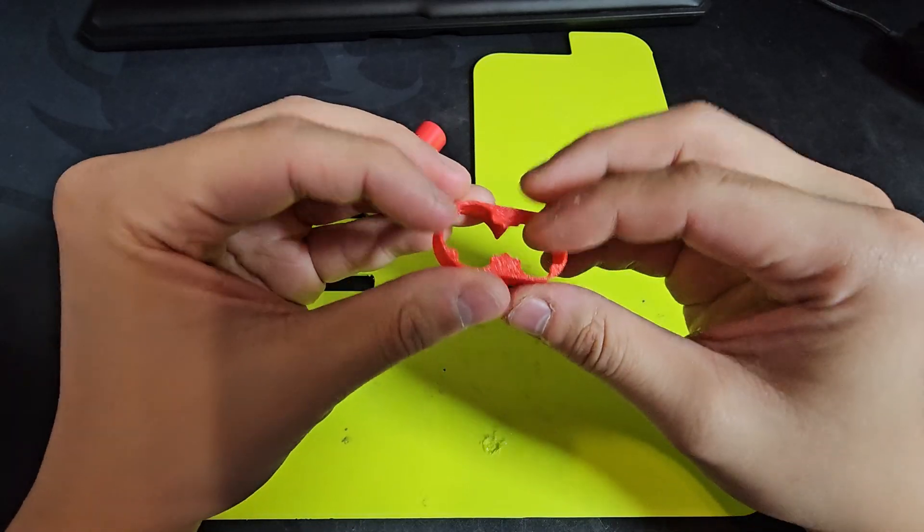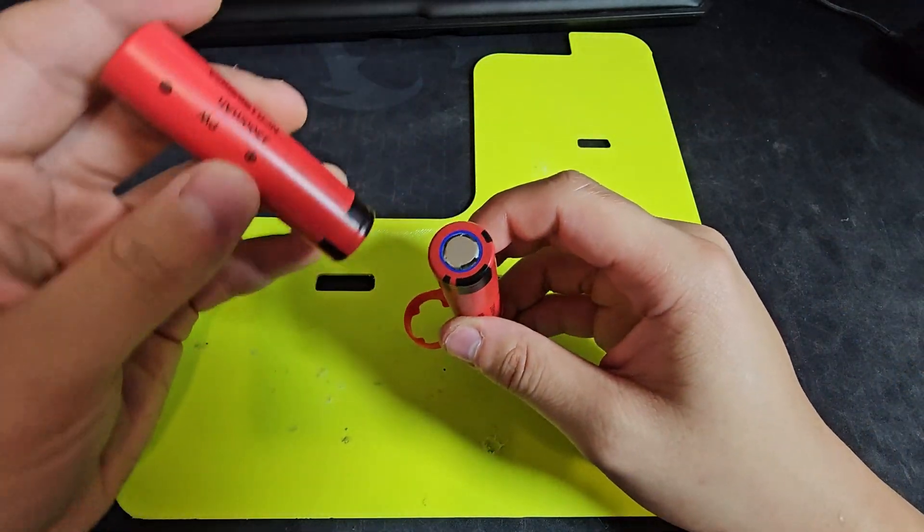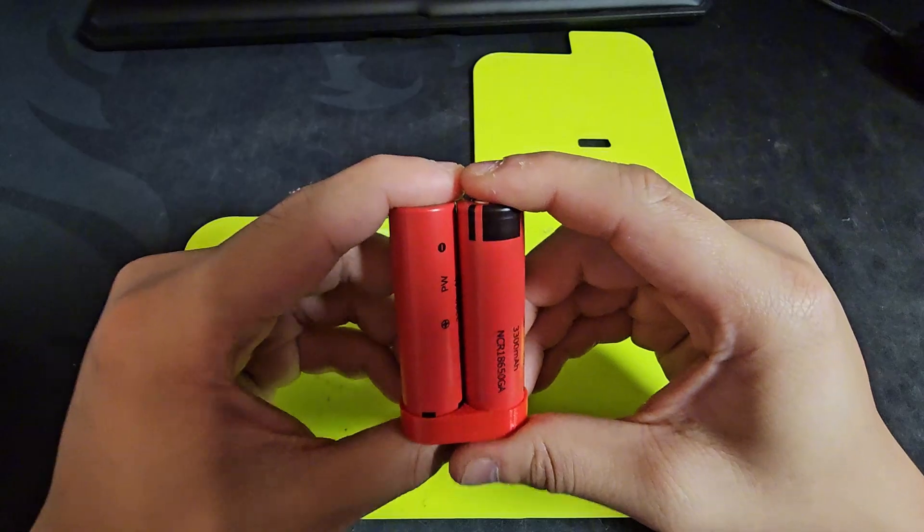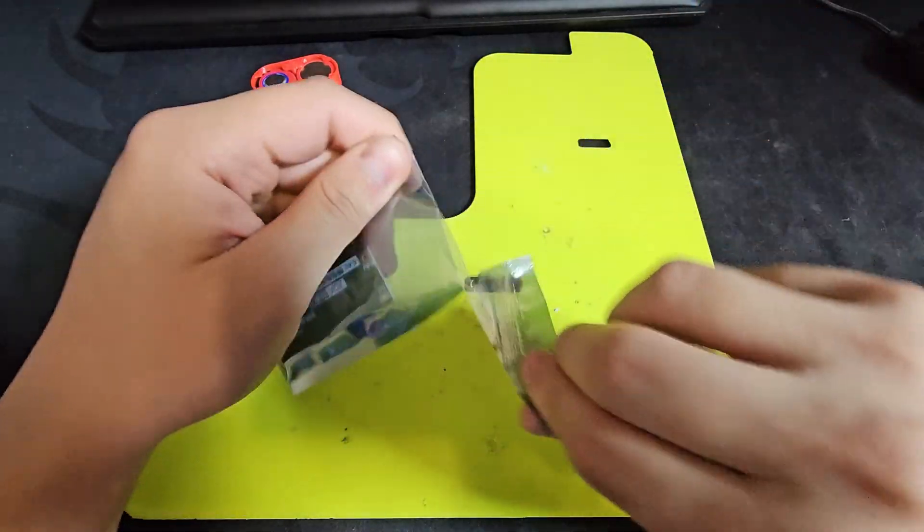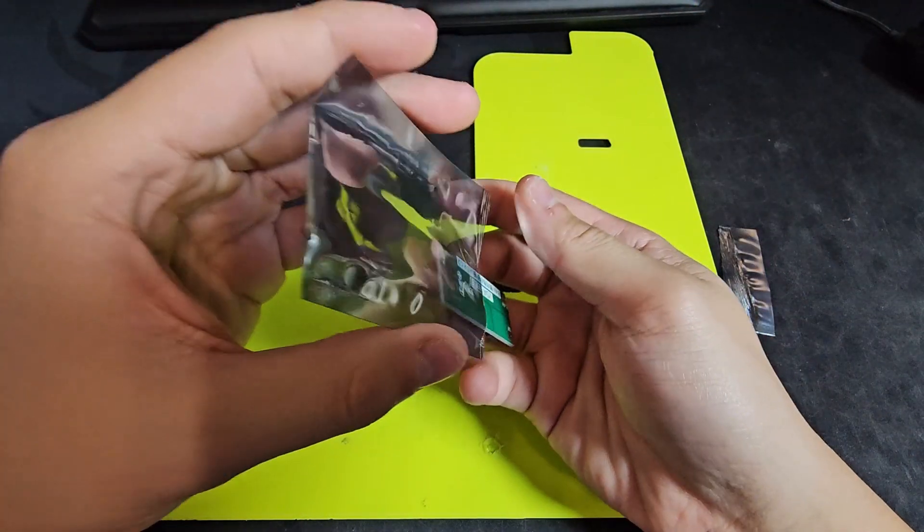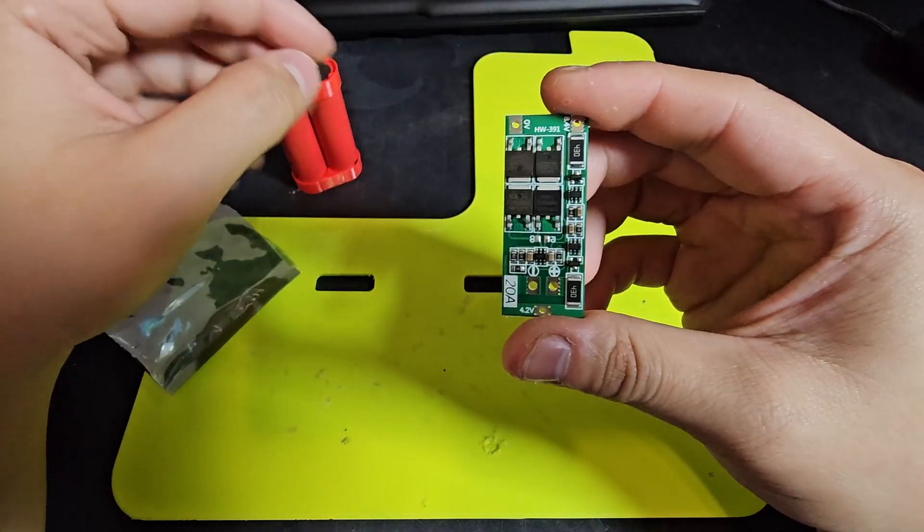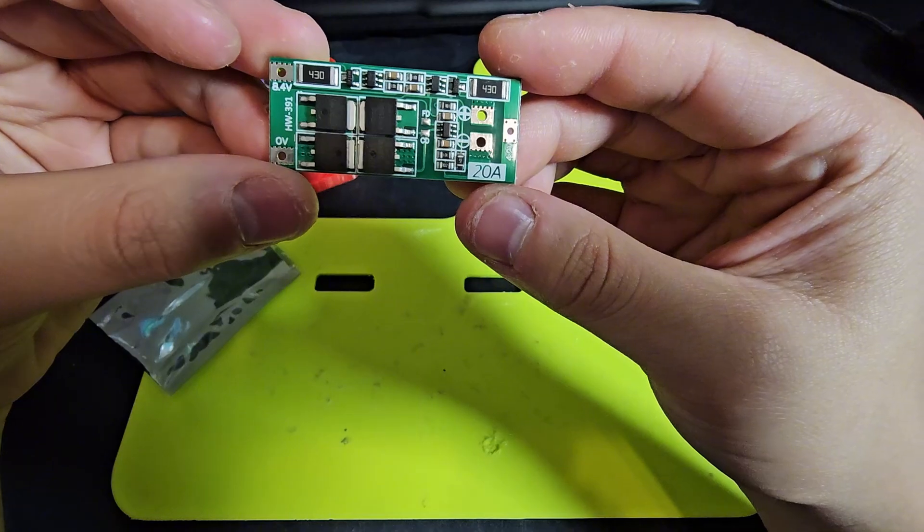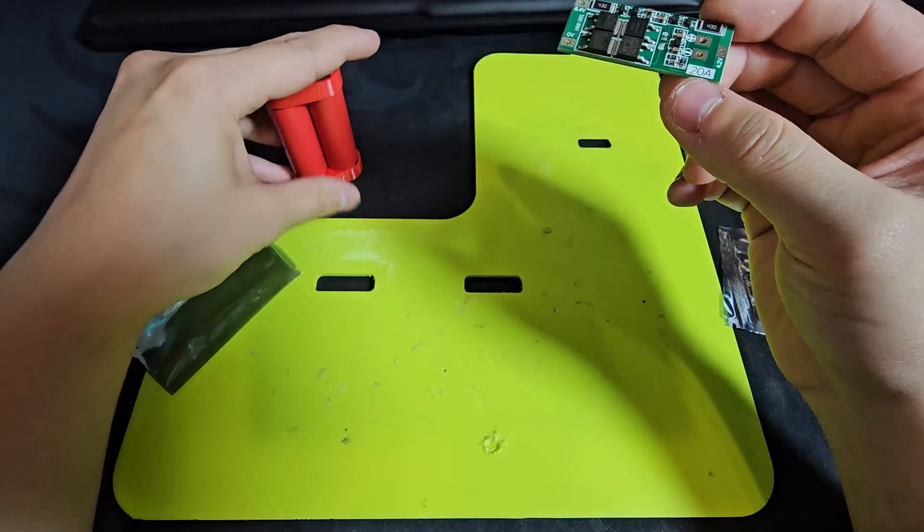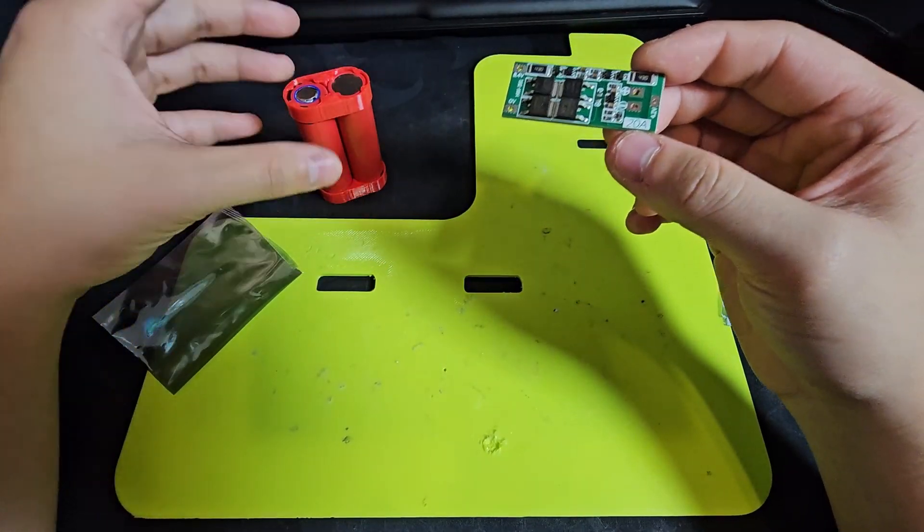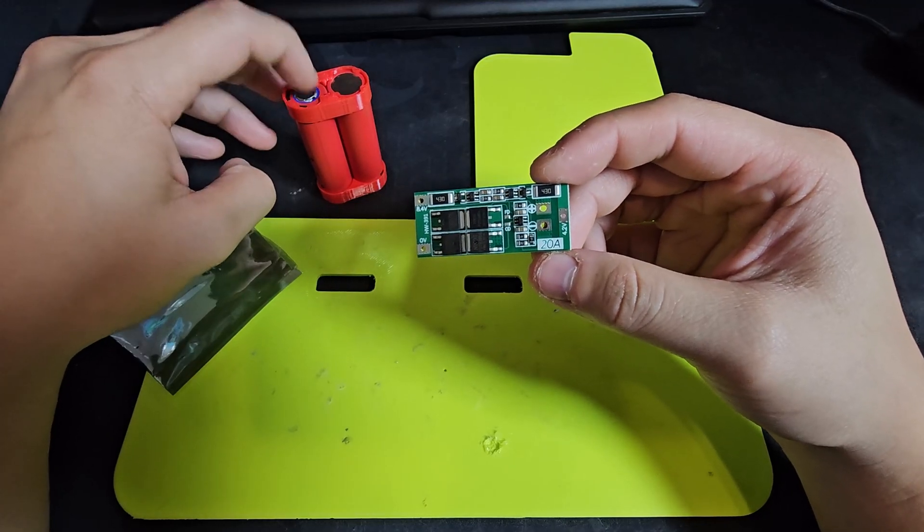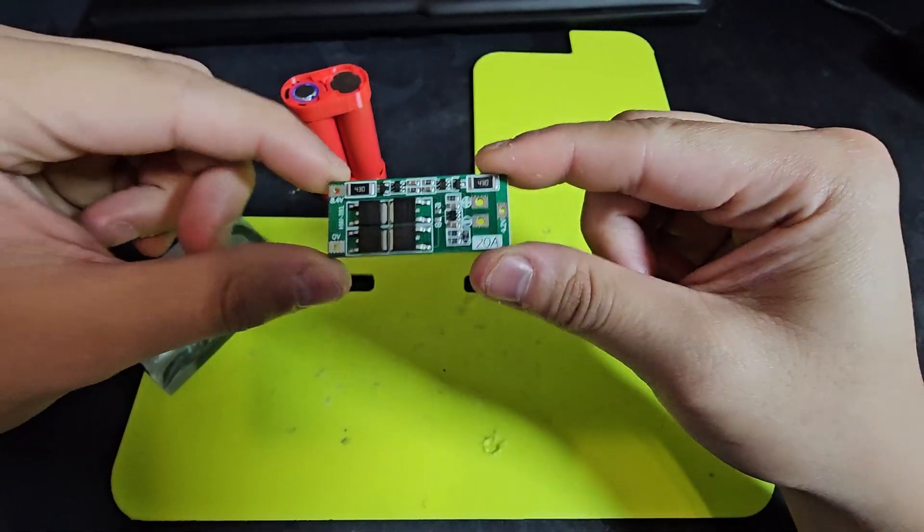First, I will use this, which I 3D printed, so that these two batteries are going to be aligned perfectly. I will be using this BMS with this build for protection, discharge, and charging. This board supports a 2S battery, and it can support up to 20A. These two are 10A, so technically, you can make this a 2S2P battery and this BMS will still support this.